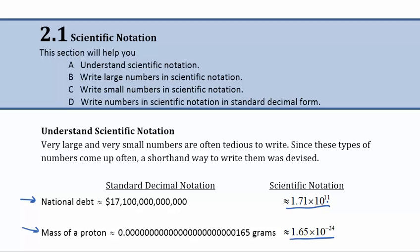Multiplying by powers of 10 moves the decimal place. When we multiply by a positive power of 10, it moves the decimal place to the right and makes the number larger. When we multiply by a negative power of 10, it moves the decimal place to the left and makes the number smaller. So very small numbers have a negative power of 10 and very large numbers have a positive power of 10.